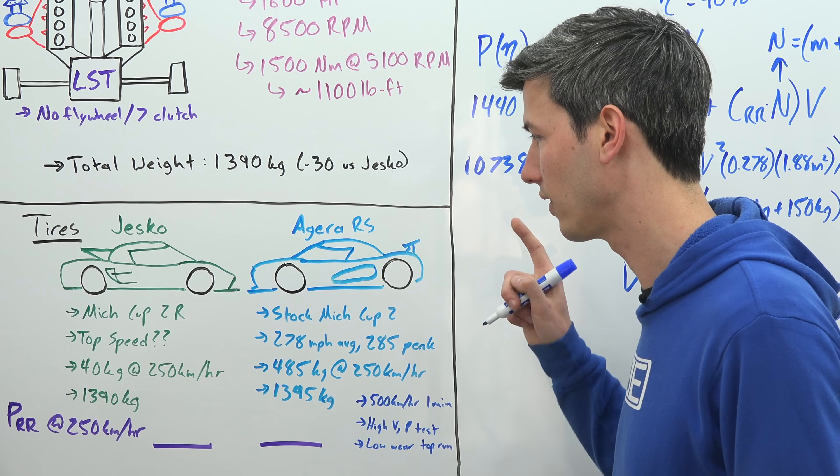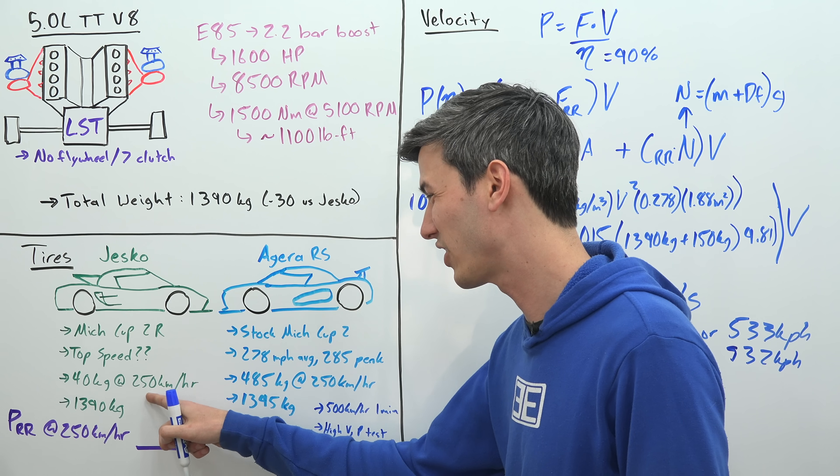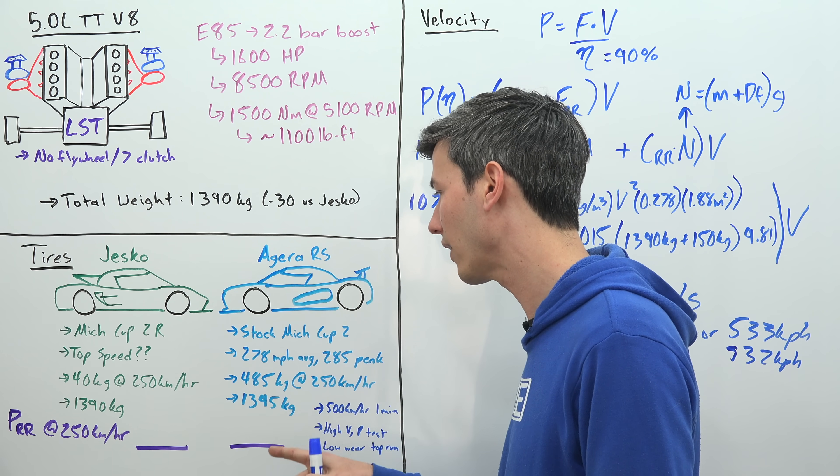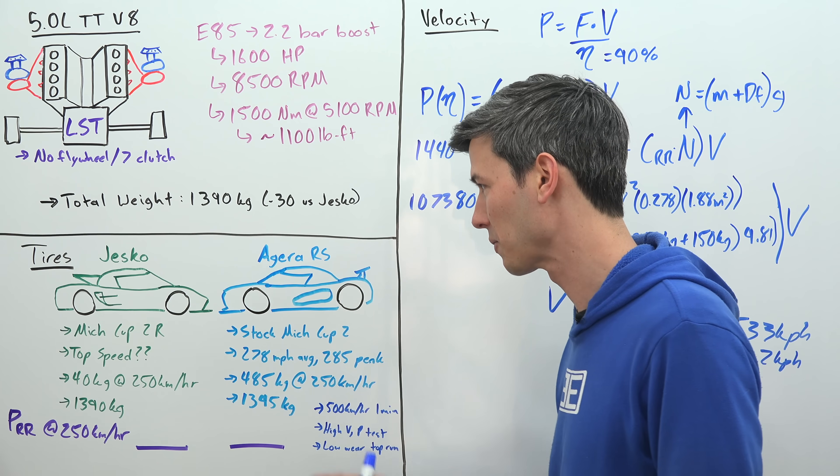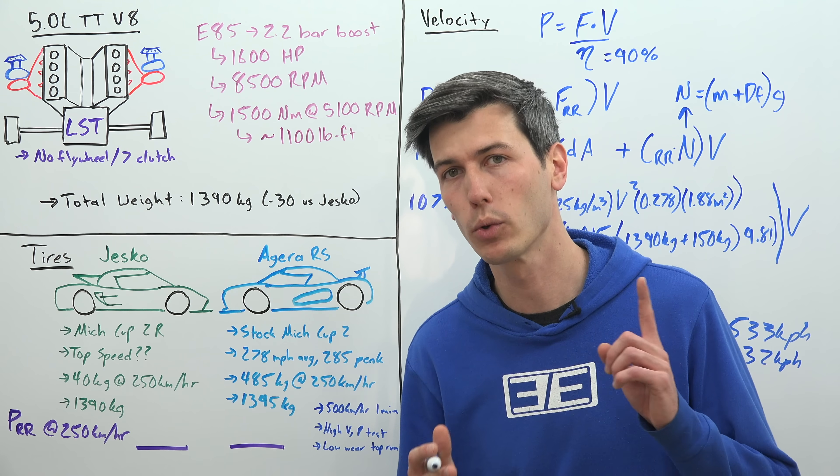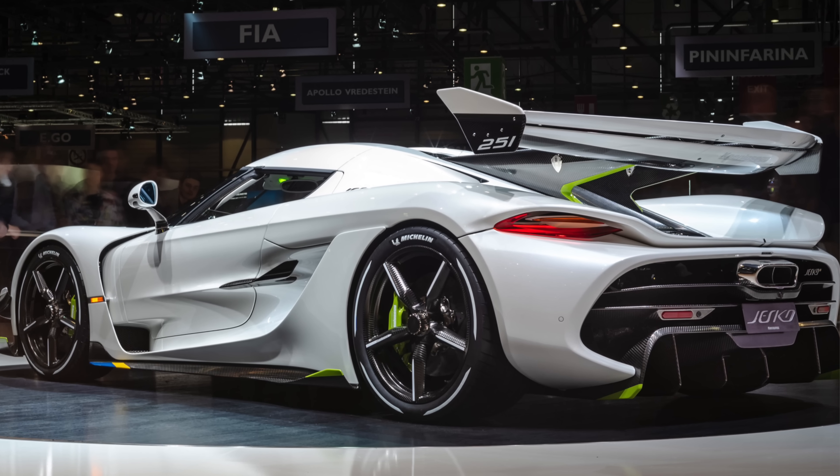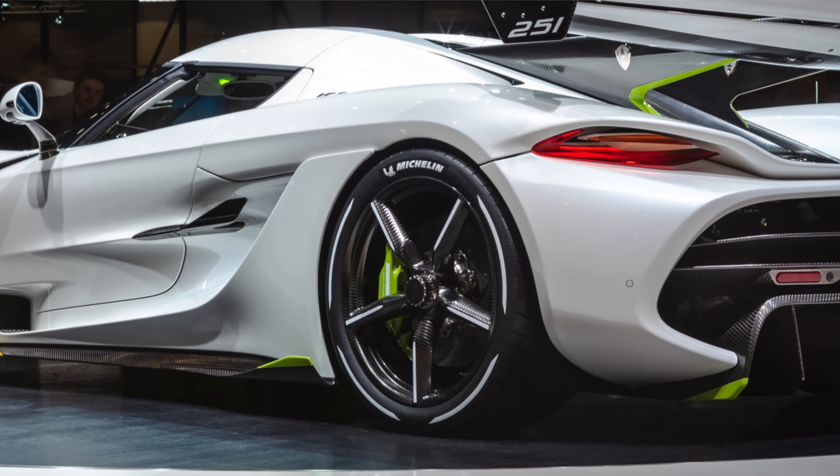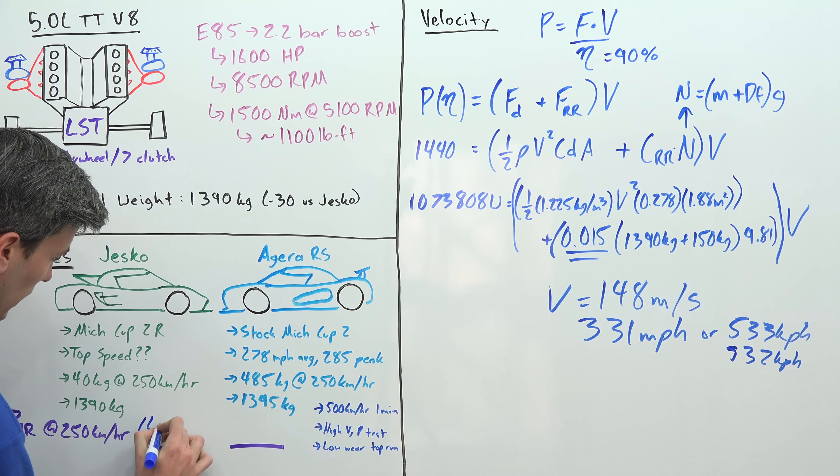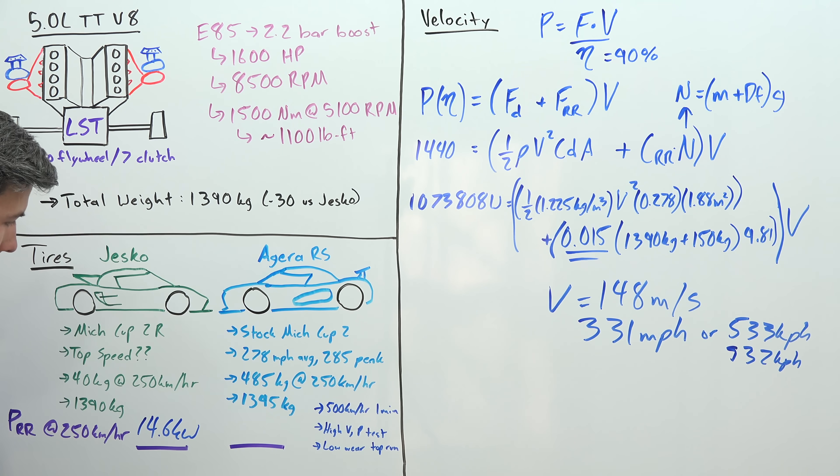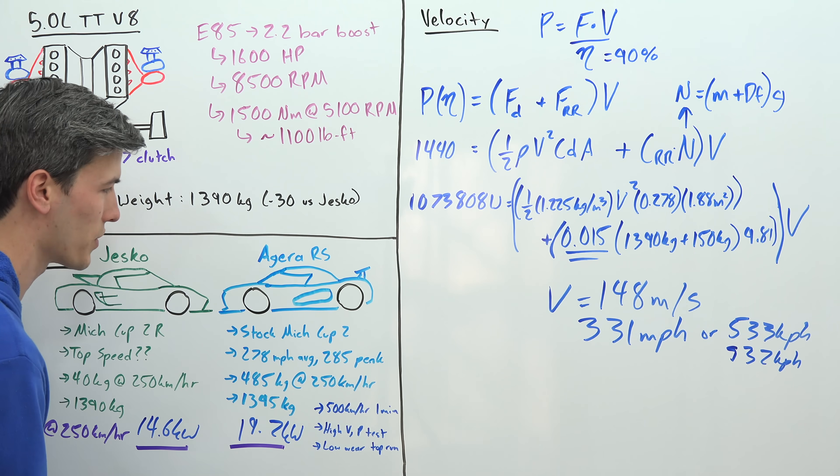Well, because it has significantly less downforce. So this Jesko Absolute is only producing 40 kilograms of downforce at 250 kilometers per hour, versus the Agera RS at 250 kilometers per hour is producing 485 kilograms - over ten times the downforce. It also weighs five kilograms more. So if you were to calculate the power required to overcome rolling resistance, essentially the heat that is going into those tires at 250 kilometers per hour - which yes, is half of what this thing is probably capable of - but if you were to calculate that power, it's going to be 14.6 kilowatts for the Jesko Absolute and 19.2 kilowatts for the Agera RS, so about 31% higher for the Agera RS versus the Jesko, and the Jesko is only driving 16 to 19% faster.